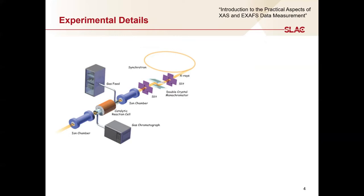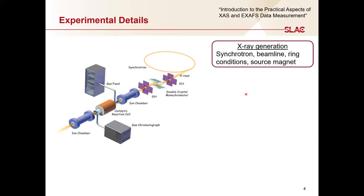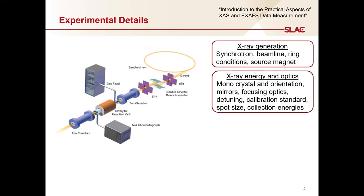First, let's look at the details that should be included with each component of your experiment. The measurement starts with X-ray generation. You should specify which synchrotron and which beamline was used to collect the data. You should also state the ring conditions, like current and energy, and the source magnet used to generate the X-rays. Next, provide details on the X-ray energy and optics: what monochromator crystal and orientation were used, what mirrors or focusing optics were used, did you detune the beam, and if so how much and at what energy?